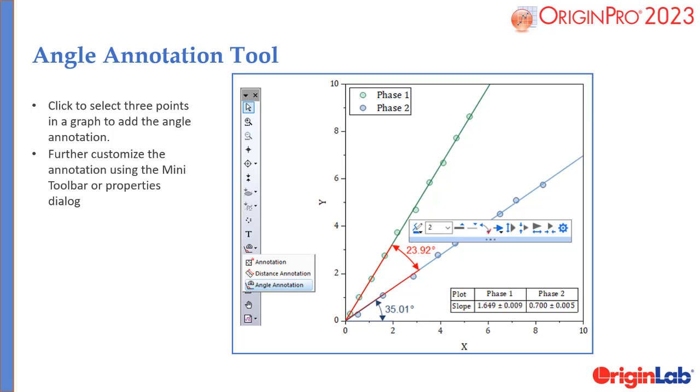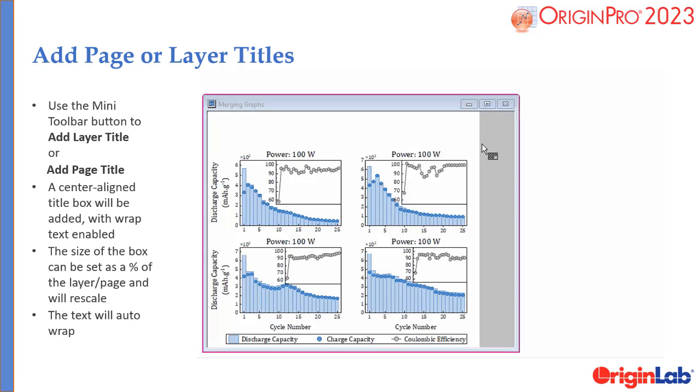A new tool for angle annotation in graphs has been added. New mini toolbar buttons and properties have been added to support layer and page level titles.